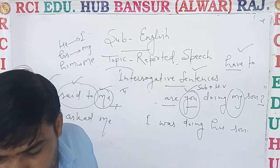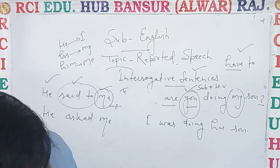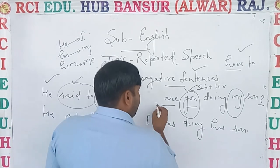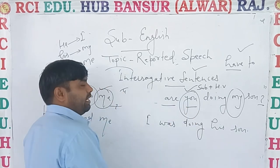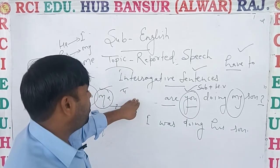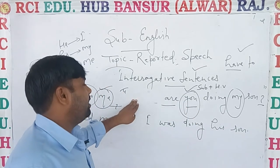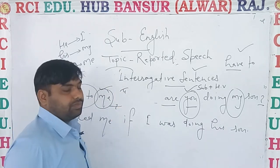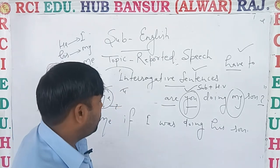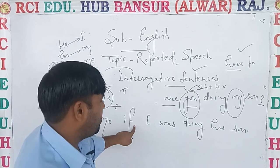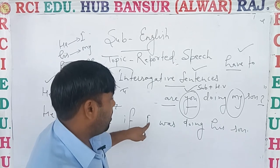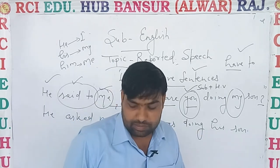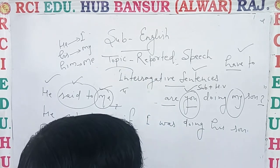'Are you doing my son?' — now it is an interrogative sentence, but there is no WH word. In such a condition, we will use 'if'. Remove commas. Use 'if I was doing his' — you try to understand, it is just an example.